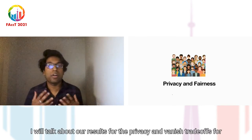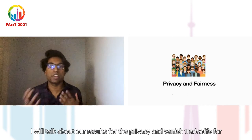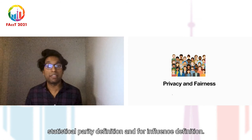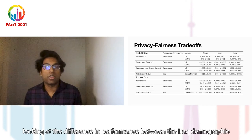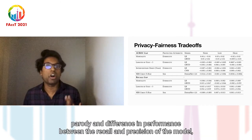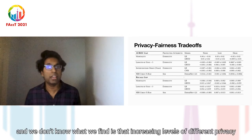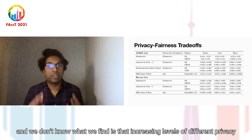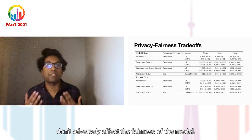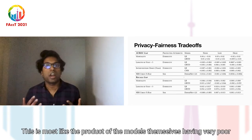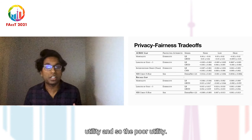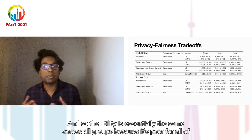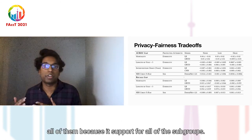Finally, I'll talk about our results for the privacy and fairness trade-offs using statistical parity definitions and influence definitions. For statistical parity, we look at the difference in AUROC, demographic parity, and difference in recall and precision between groups. We find that increasing levels of differential privacy don't adversely affect the fairness of the model — most likely because the models have very poor utility, and that poor utility is essentially the same across all subgroups.